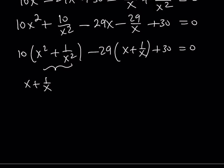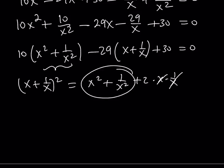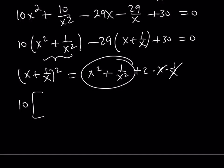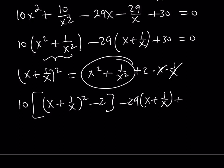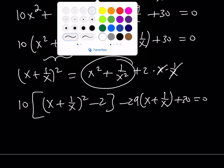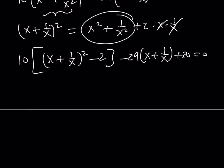Now, this can be expressed in terms of x plus 1 over x. Because if you square x plus 1 over x, you get x squared plus 1 over x squared plus 2 times x times 1 over x. But that just becomes 1. And you get 2. So, you can basically isolate this and write the x squared plus 1 over x squared as x plus 1 over x quantity squared minus 2. And then minus 29 times x plus 1 over x plus 30 equals 0. And at this point, we can use substitution and call this y. And we get 10 times y squared minus 2 minus 29y plus 30 is equal to 0. And this becomes a quadratic equation.